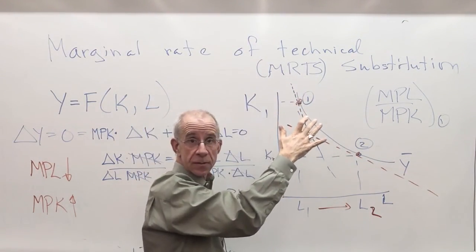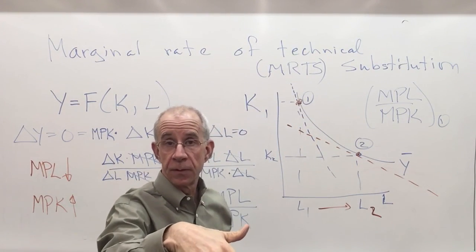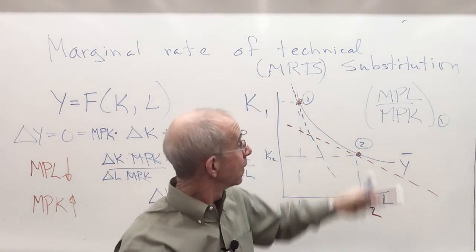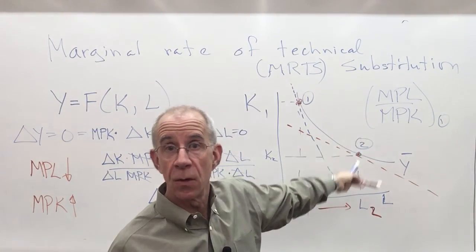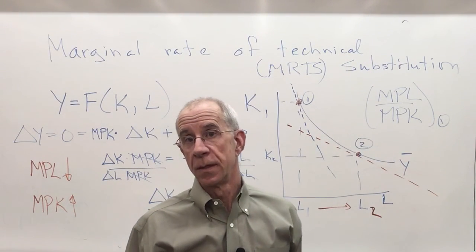But marginal rate of technical substitution, simply the slope of an isoquant. And simply the ratio of the marginal productivity of the two inputs, the two factor inputs.